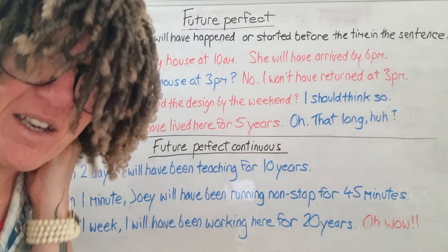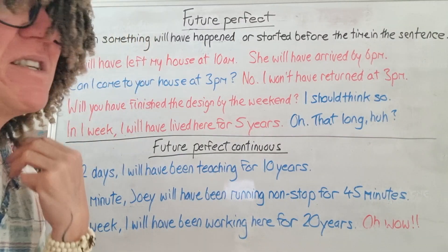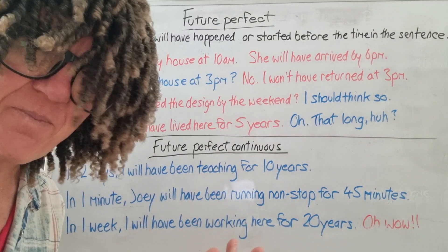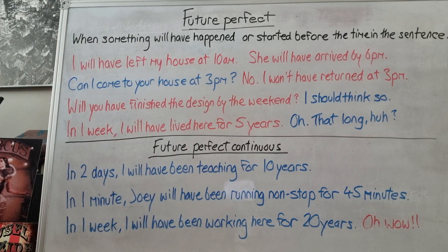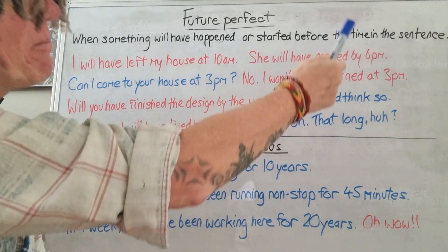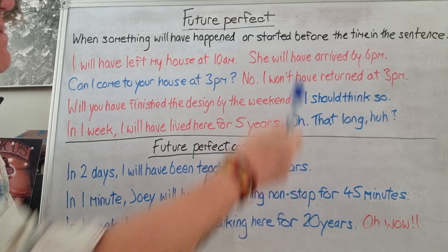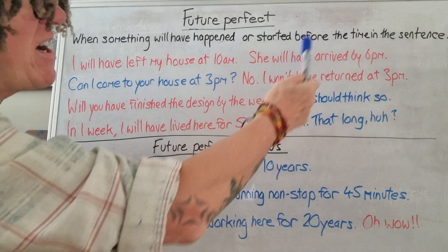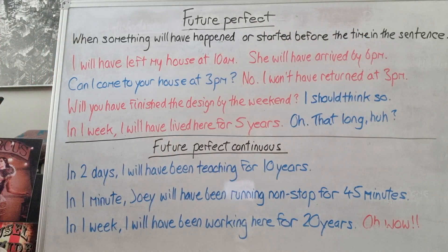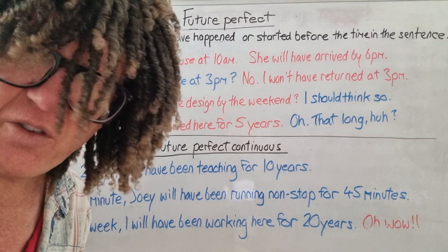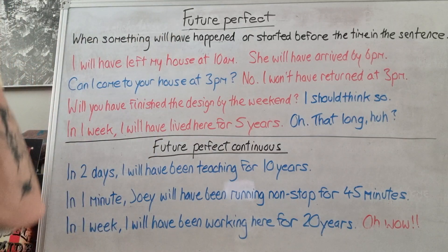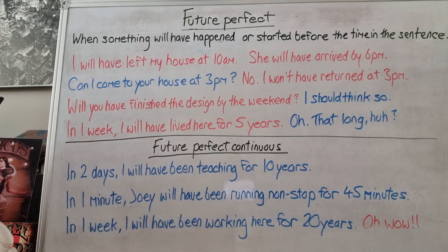I can also say 'by 10 a.m.' because 'by' means before in many cases — in this case, definitely. 'She will have arrived by 6 p.m.' — which means she is arriving before 6 p.m. So you can come visit her at 6 p.m. because she will be arriving before then.